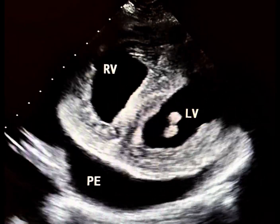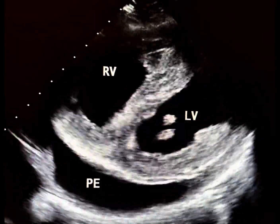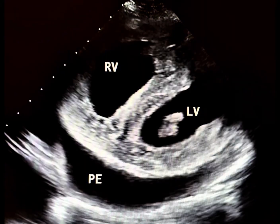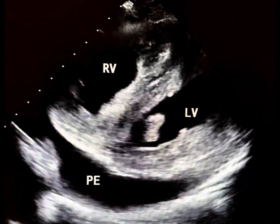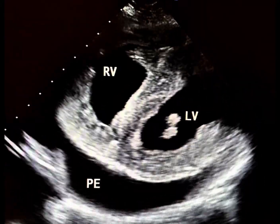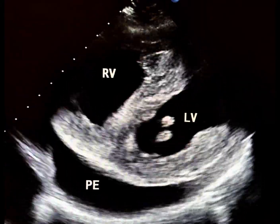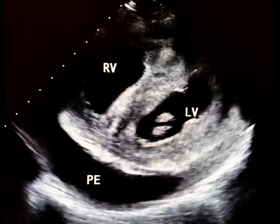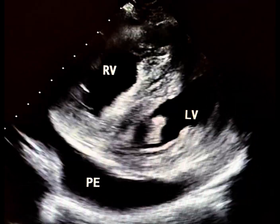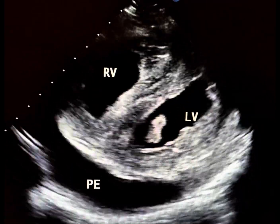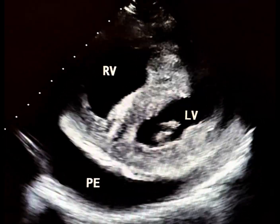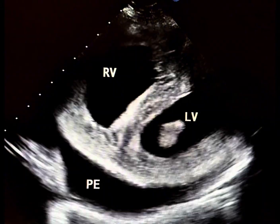This short axis view demonstrates right ventricular enlargement with severe right ventricular hypertrophy (RVH). A pericardial effusion, an ominous sign in pulmonary hypertension, is also present.